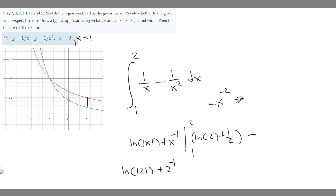And then we minus whatever 1 plugged in is. So the ln of the absolute value of 1 plus 1 to the minus 1. So the natural log of 1 is just 0. That's something you should know. It's a rule. So 0 plus, and then 1 to the minus 1 is just 1 over 1 to the 1, which is just 1. So it's just going to be 1. So we're just minusing 1. So we have the ln of 2 plus 1 half minus 1. So it'll become ln of 2. And then 1 half minus 1 is going to be minus 1 half. So this right here is going to be the area between these two curves from 1 to 2.